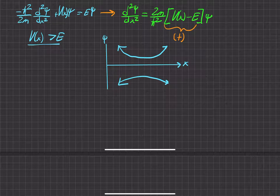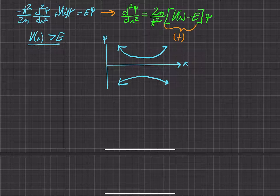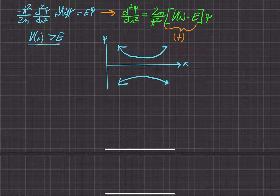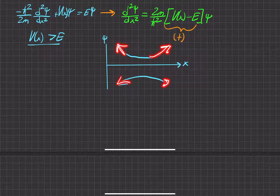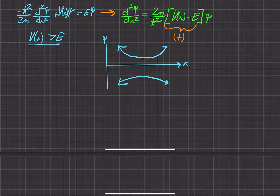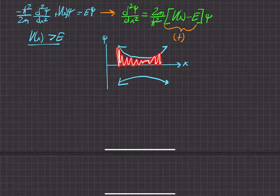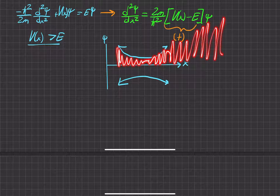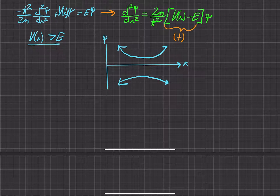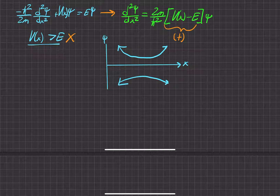This is a wave function, but it's not a very good one, because we know that the wave function can't blow up. As you can see, it's blowing up in both directions. If we compute the probability density squared and integrate it, it's going to blow up as it goes off to infinity, which is not good for normalizable solutions. So we know this case is not valid.